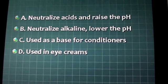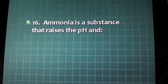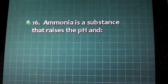Alkalinamins are used in hair products instead of ammonia to: A. Neutralize acids and raise the pH, B. Neutralize alkaline, lower the pH, C. Used as a base for conditioners, D. Used in eye creams.